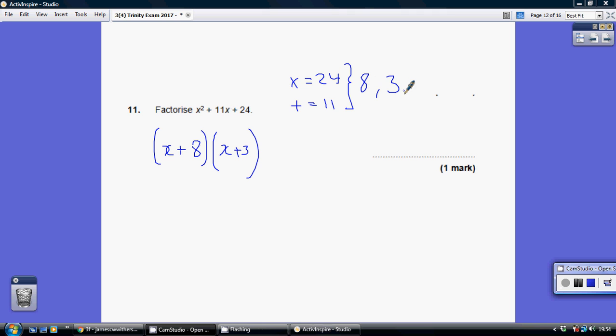Well, that's 8 and 3, because 8 times 3 is 24, while at the same time 8 and 3 is 11. So our final answer is x plus 8, x plus 3.